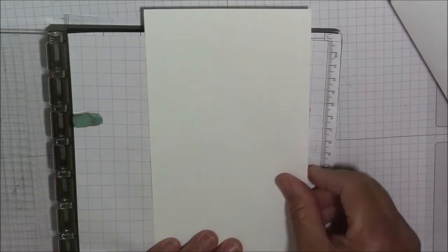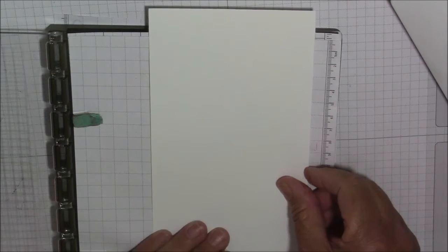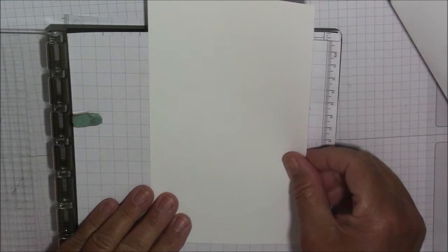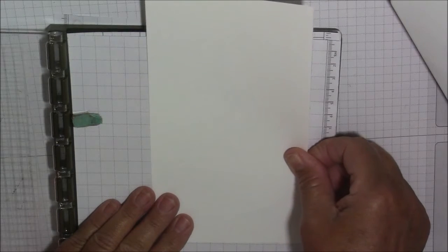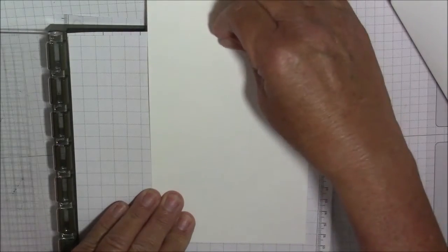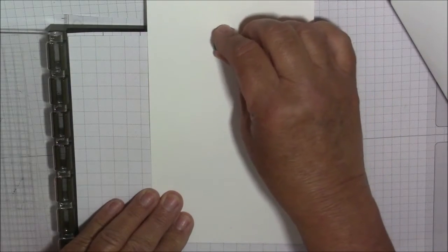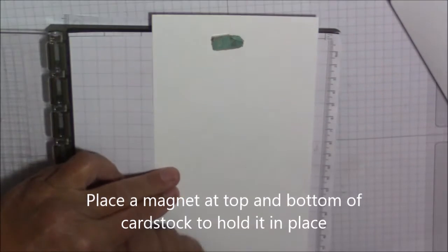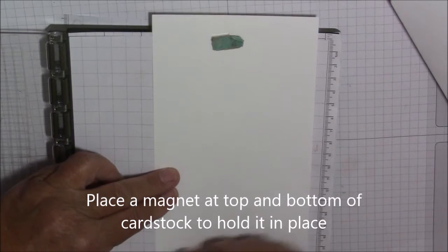My paper is cut at four and a half inches. I think we can go to here, so it's at four and a half by eight and a half. I'm going to put a magnet towards the top, actually all the way down so I can put a magnet at each end to hold our paper in place.